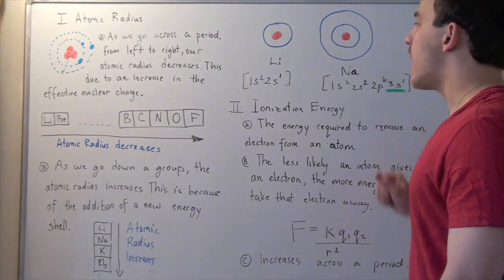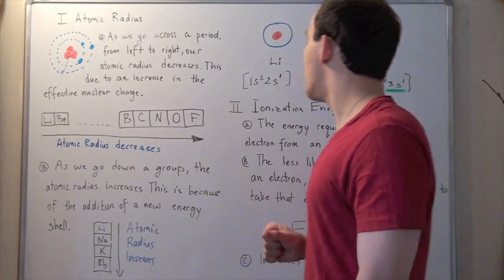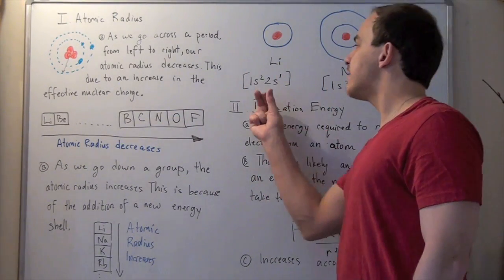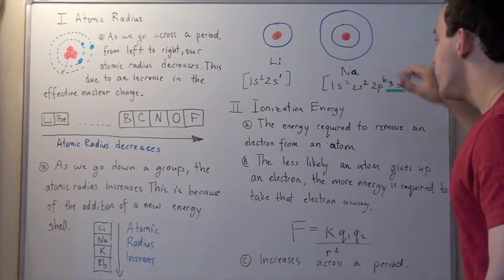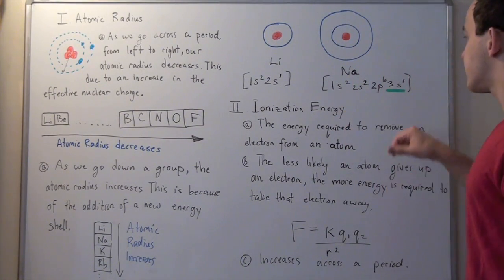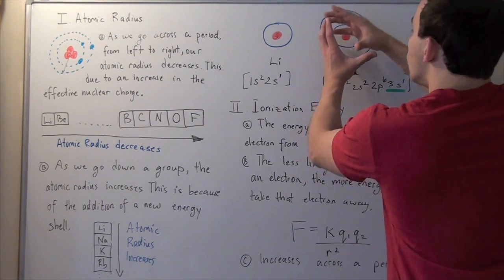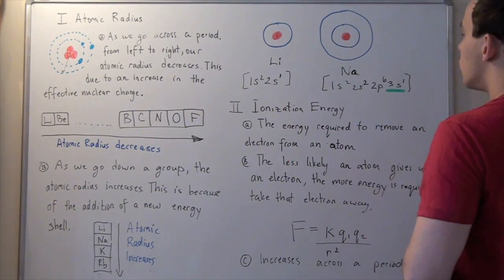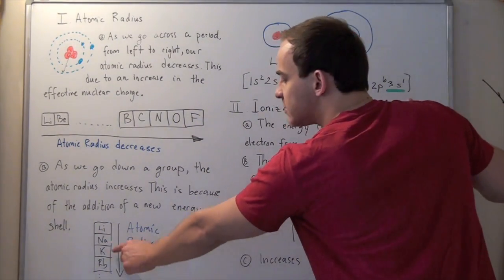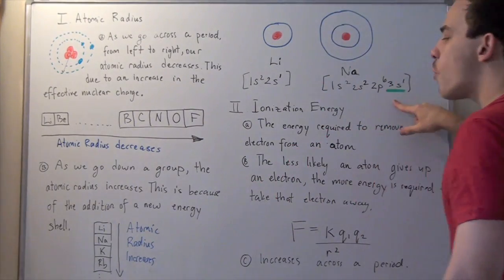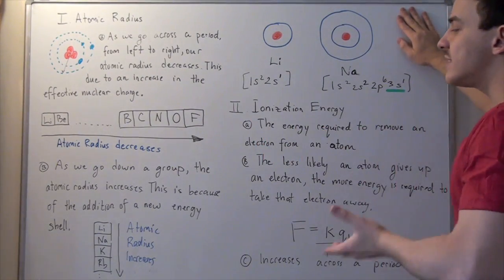Let's look at lithium and sodium. Sodium is right below lithium in the same group on the periodic table. Lithium has two energy levels — 1s and 2s — while sodium has three energy levels: 1s, 2s, and 3s. This addition of the 3s means that our atom will grow in size; the outermost shell is the 3s shell. So when we move down to potassium, potassium will have a 4s shell, making potassium even larger than sodium and definitely larger than lithium. And that's exactly what we see.